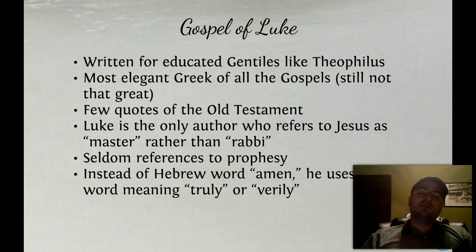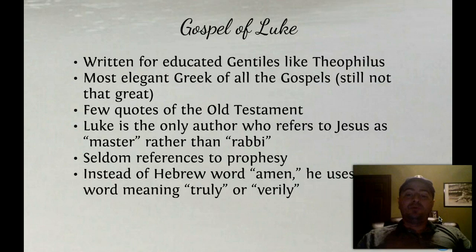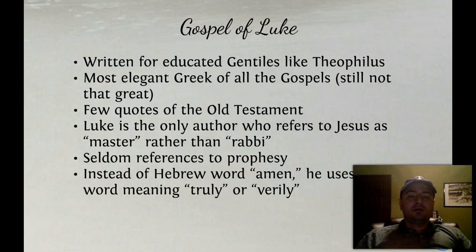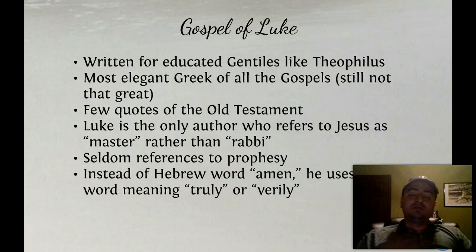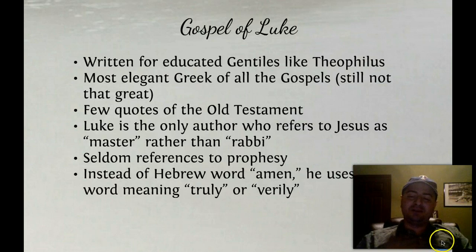In the Gospel of Luke there are very few quotes of the Old Testament, which suggests it's written for Gentiles who wouldn't know the Old Testament like Jews do. Luke is the only author who refers to Jesus as 'Master' rather than 'Rabbi' — Rabbi is the Hebrew term for teacher, Master is the Greek term. He seldom refers to prophecy, and instead of using the Hebrew word 'Amen,' he uses the Greek word 'Truly' or 'Verily' — 'Verily, verily, I say unto you,' from the King James Version.